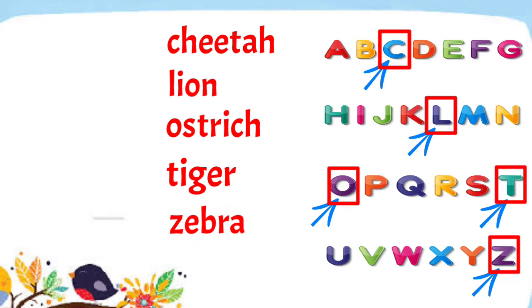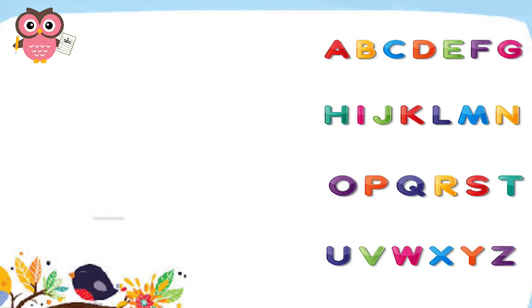Therefore, the new arrangement is Cheetah, Lion, Ostrich, Tiger, and Zebra. That's how you do it, kids. Next, let's have another group of words.